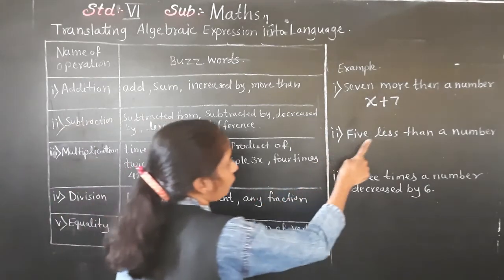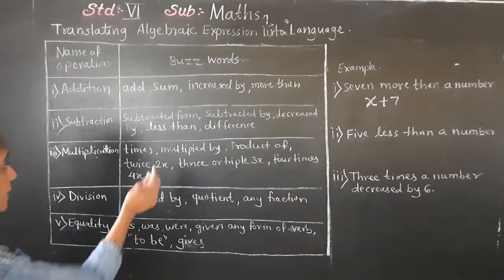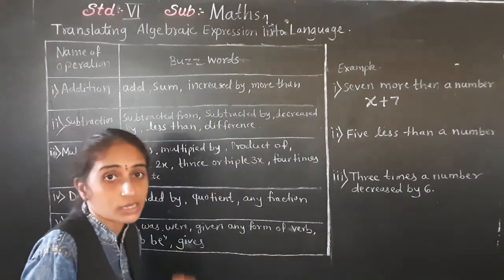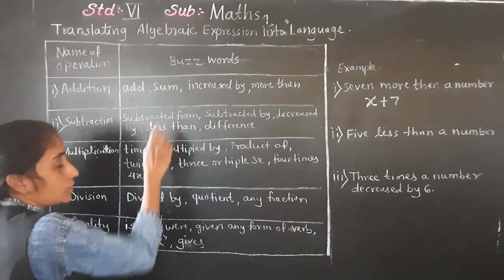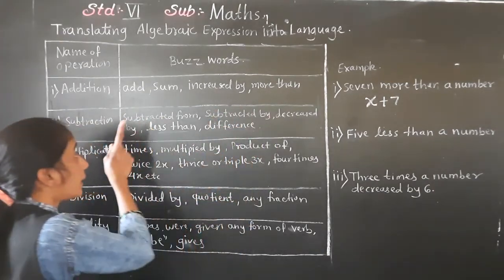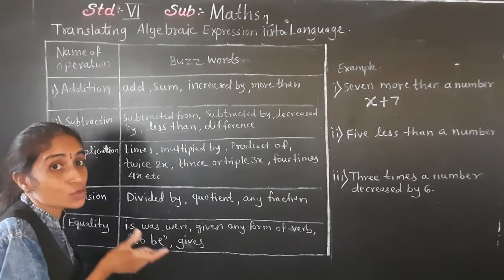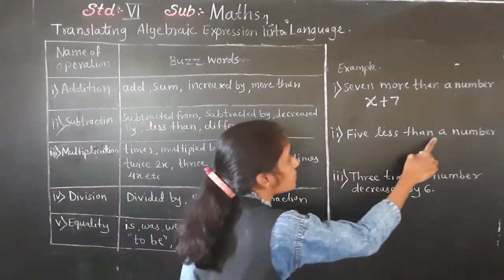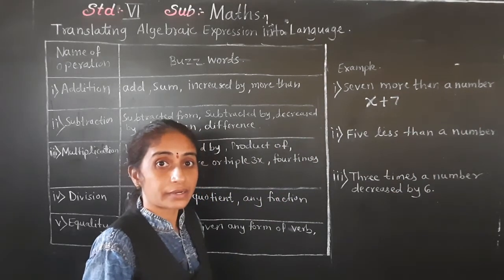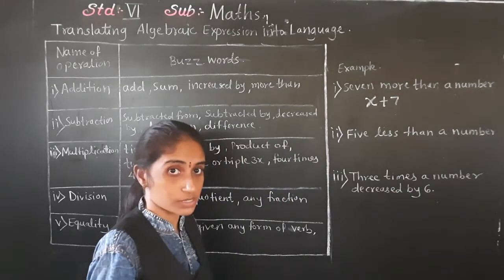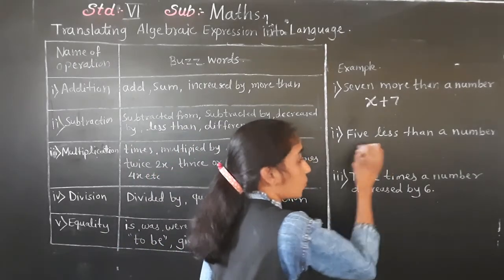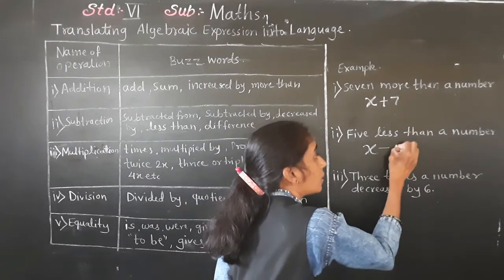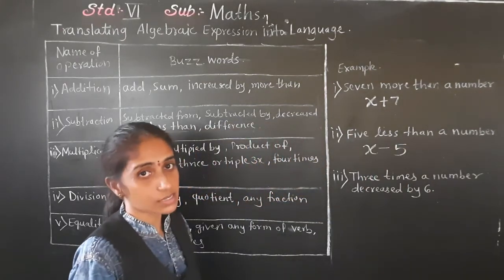Example two: 'Five less than a number.' The word 'less than' is used for subtraction. A number we consider as x. Five less than a number means x minus five.